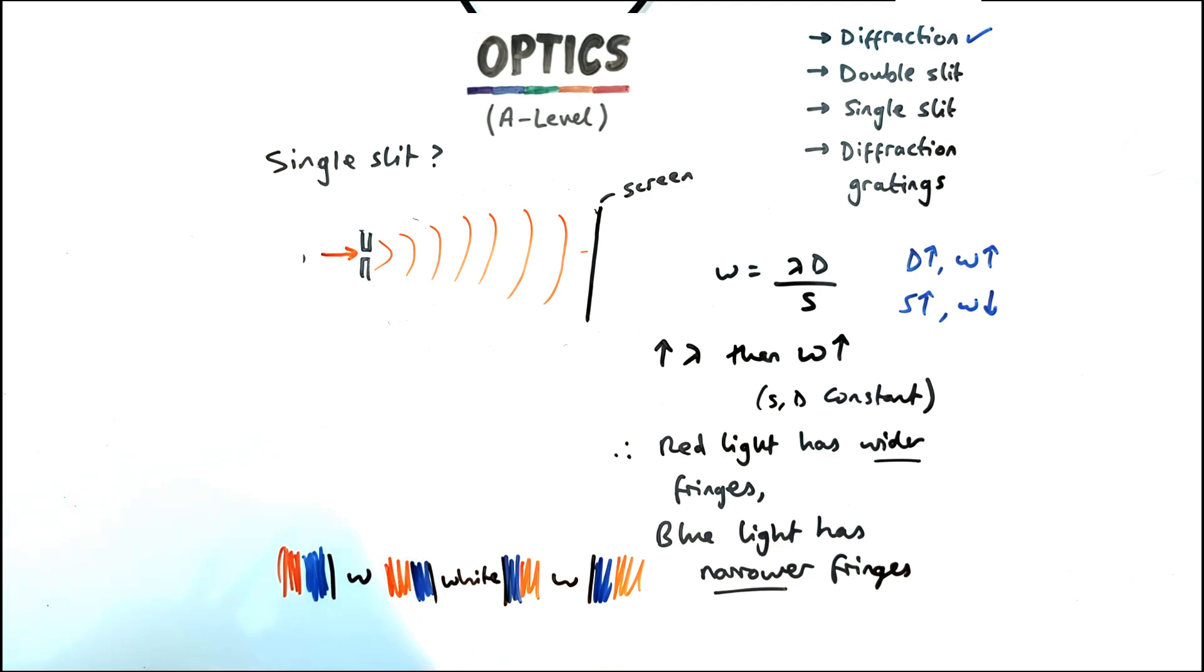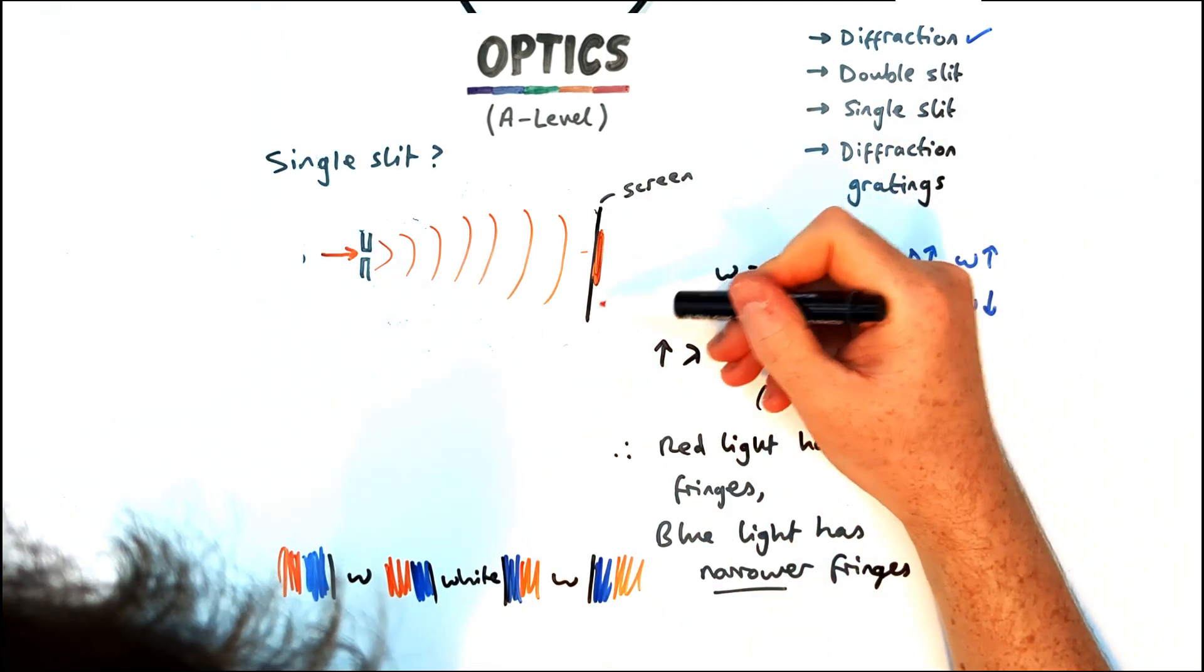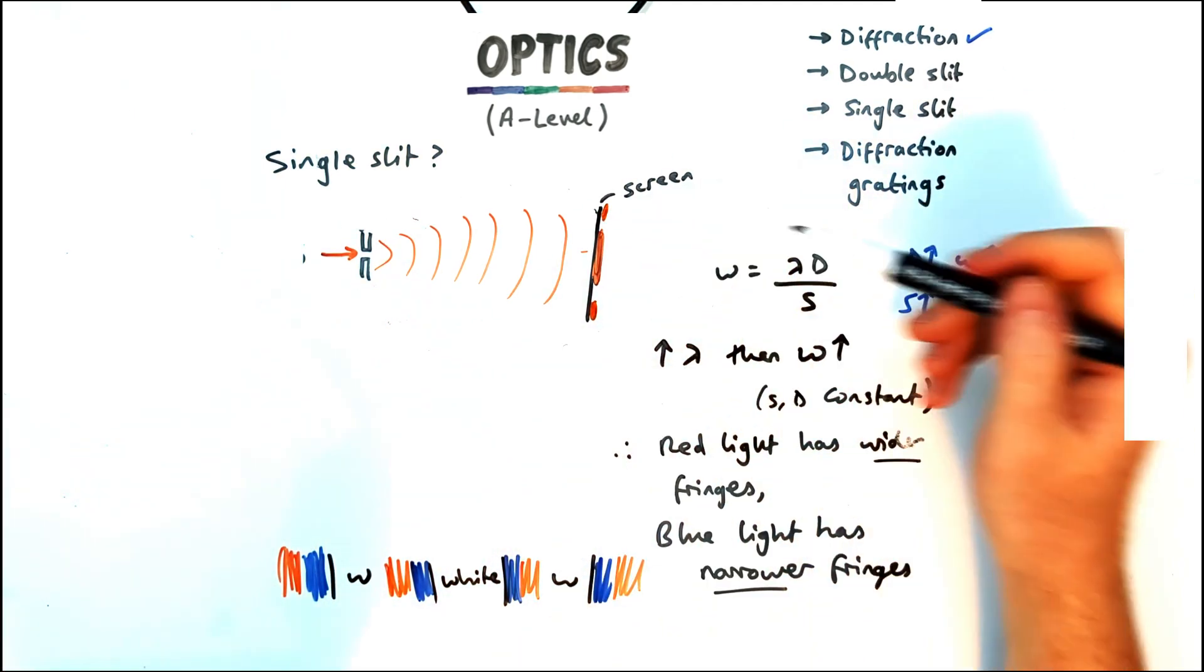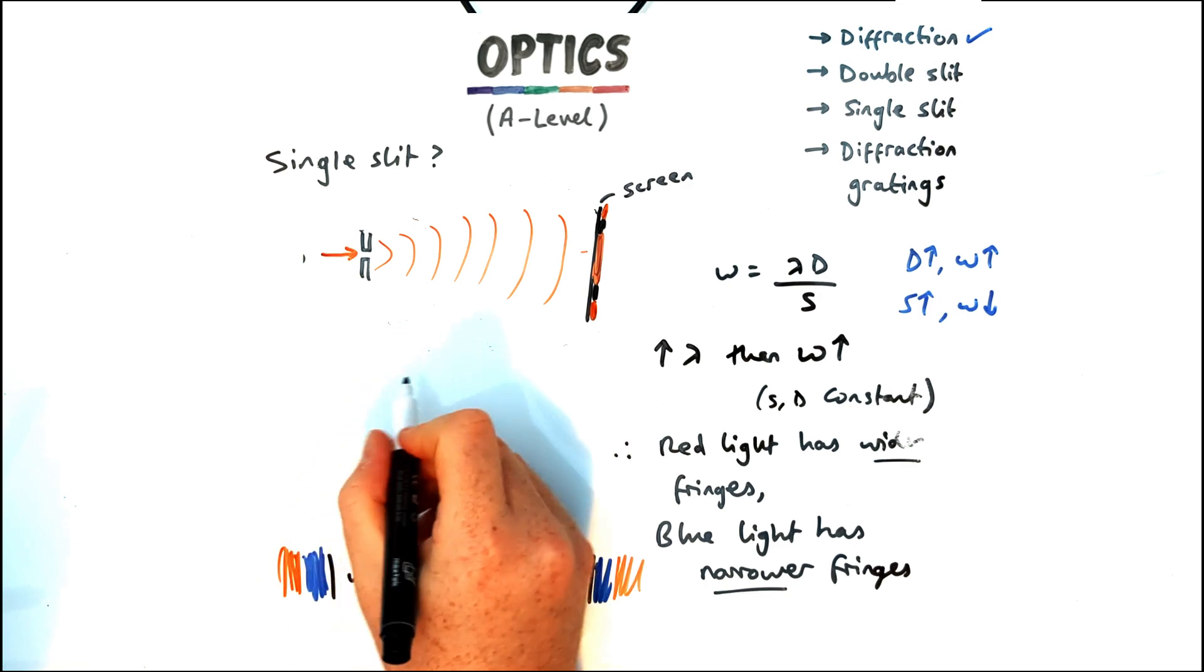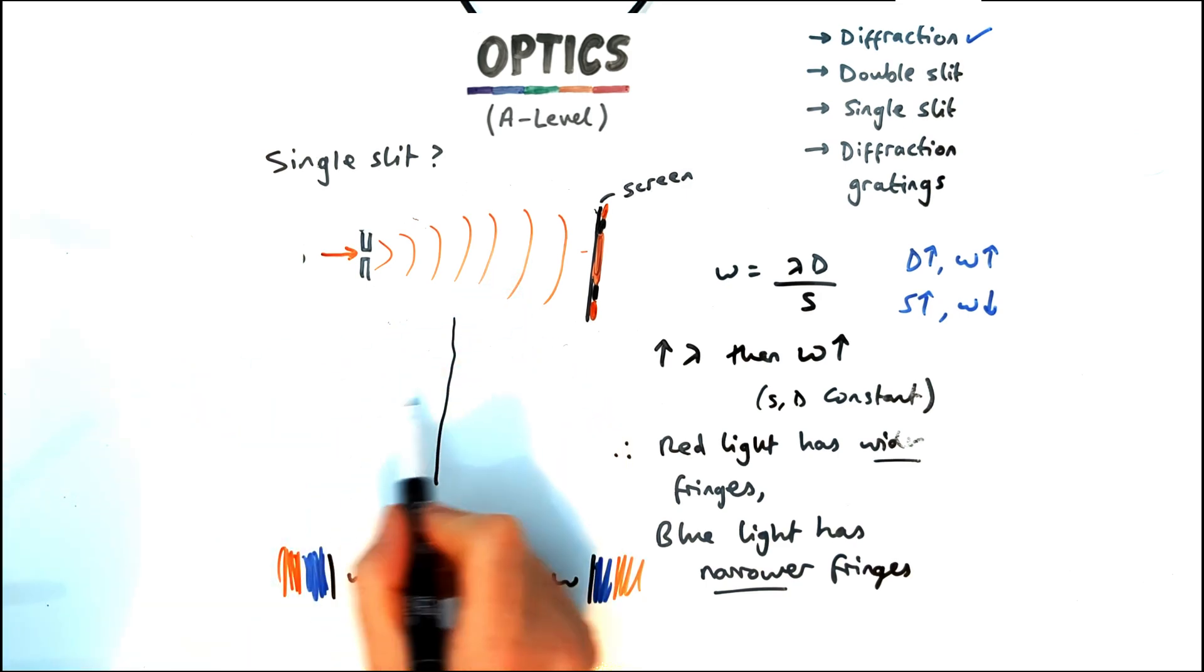Now what would happen if I replaced the double slit with a single slit? Would we still get an interference pattern? Which I know sounds weird, it seems like the wave would just go straight on and you'd have a big blob of light in the middle.